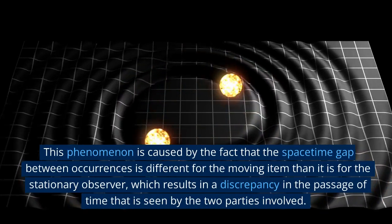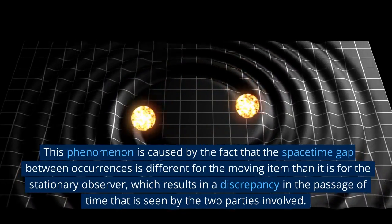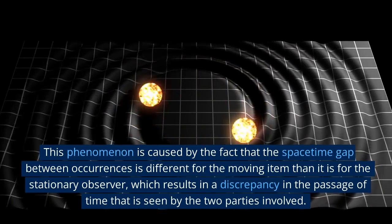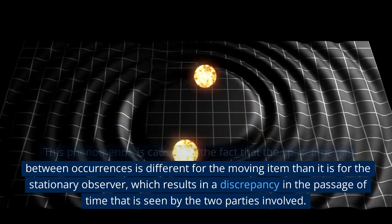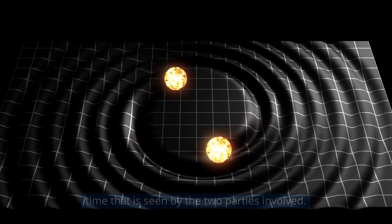This phenomenon is caused by the fact that the space-time gap between occurrences is different for the moving item than it is for the stationary observer, which results in a discrepancy in the passage of time that is seen by the two parties involved.